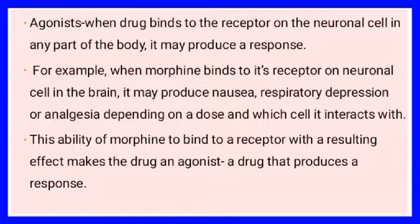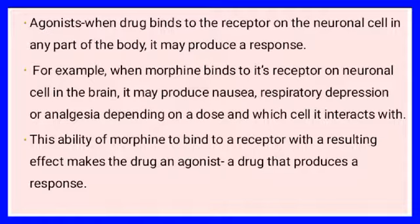If the drug has been given to relieve pain and after it has bound to its receptors the effect has taken place, then an agonist action has occurred — meaning the drug is able to combat or relieve the pain it was given for. For example, when morphine binds to its receptors in the neuronal cells in the brain, it may produce nausea, respiratory depression, and other effects. These effects are produced because the drug is an agonist — it is able to produce its function after binding to the receptors.